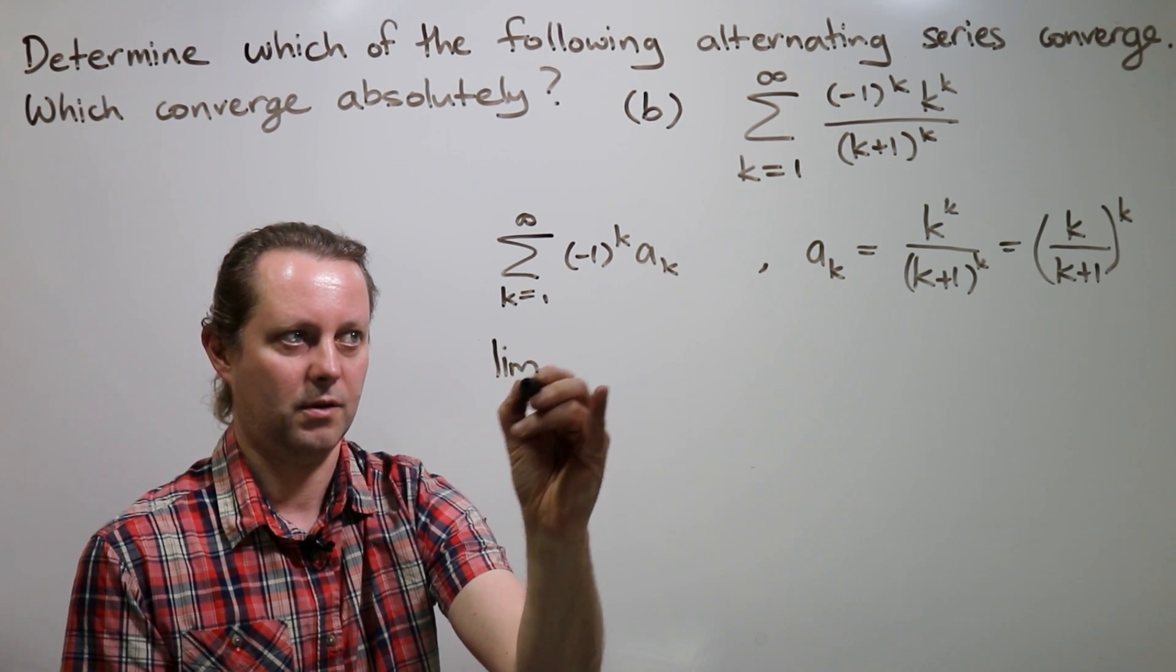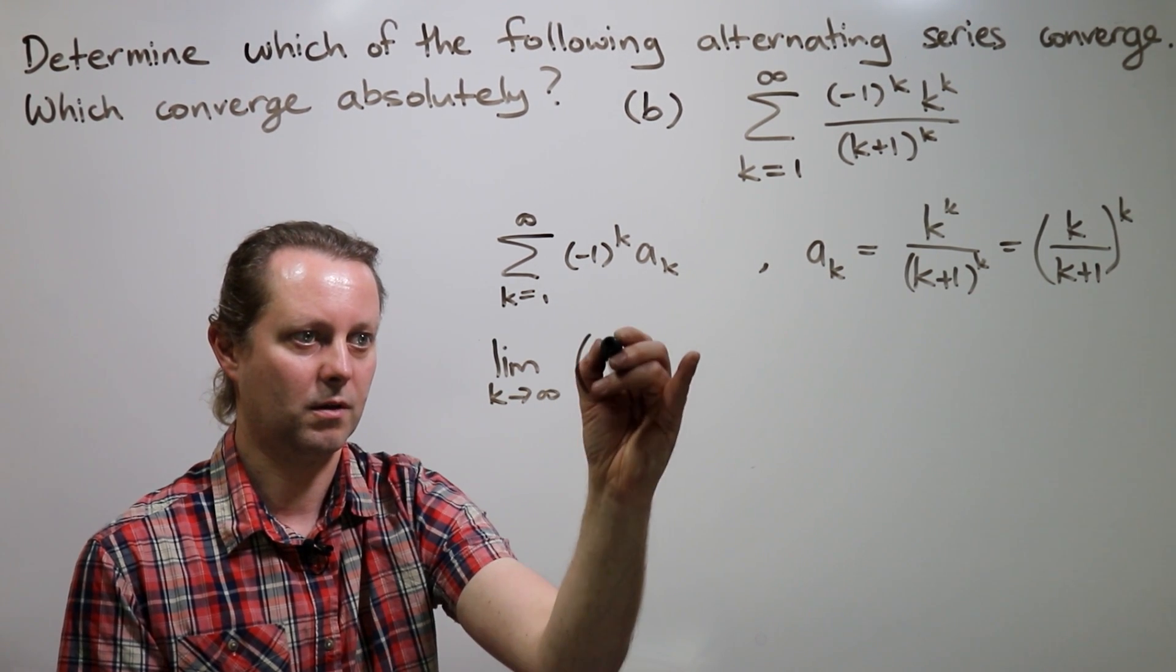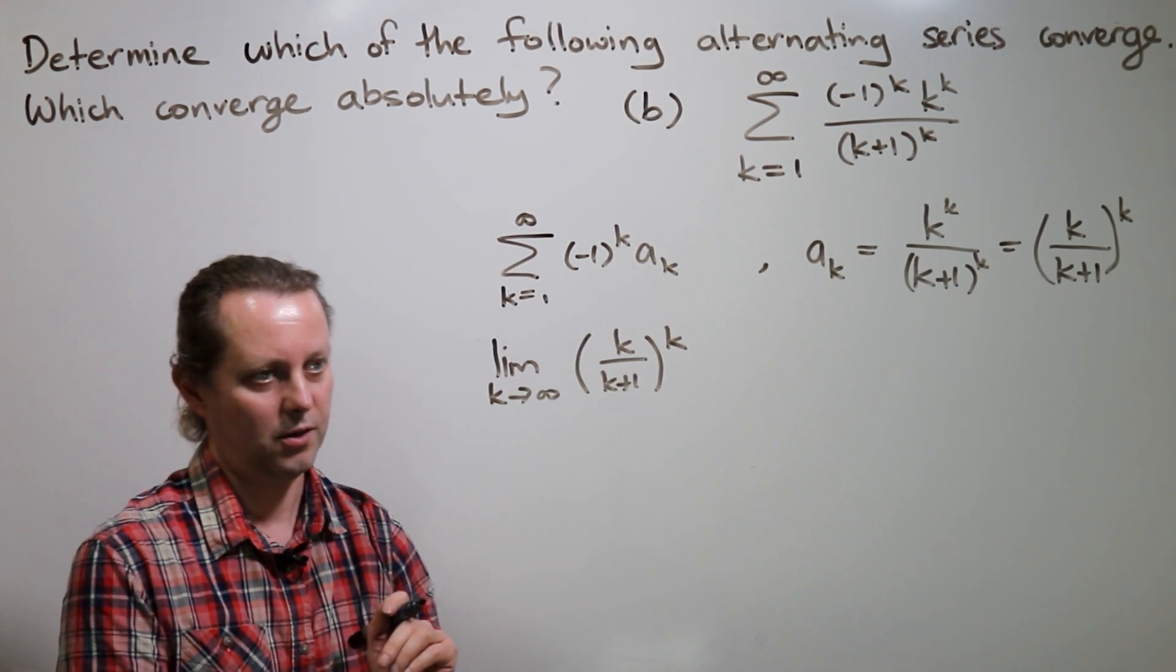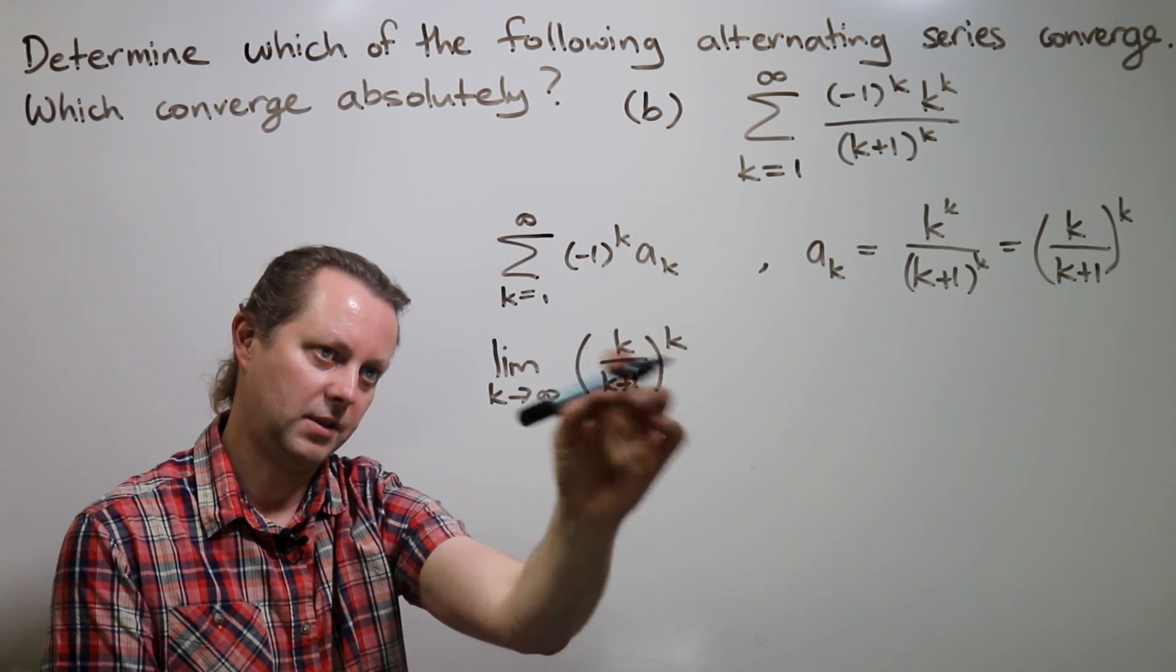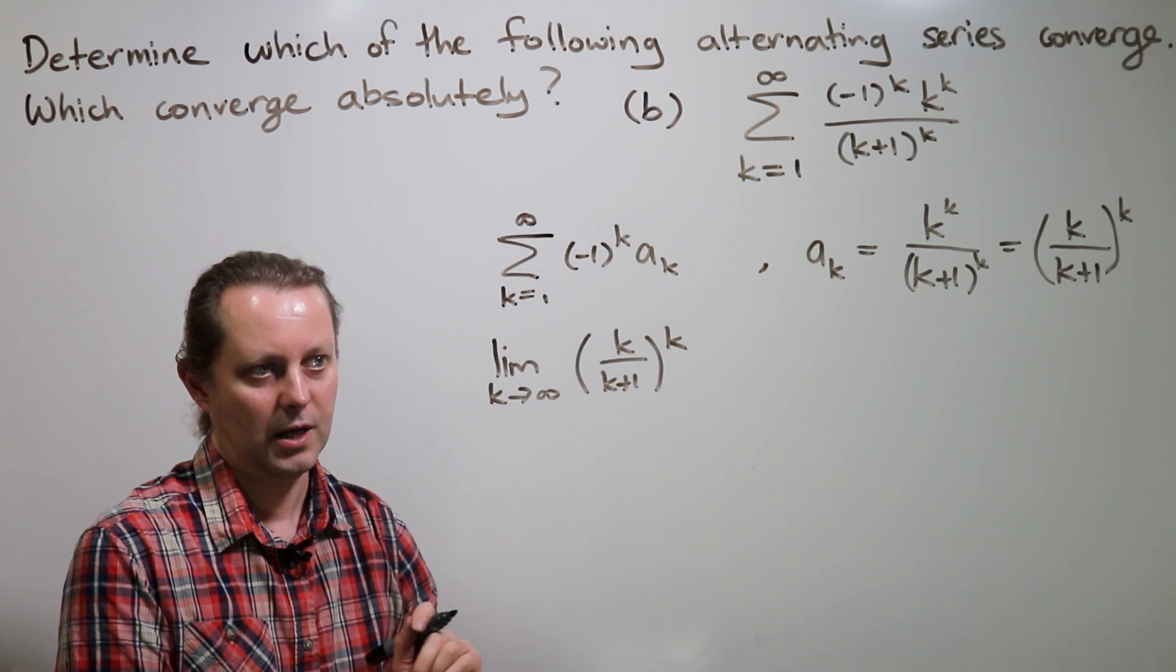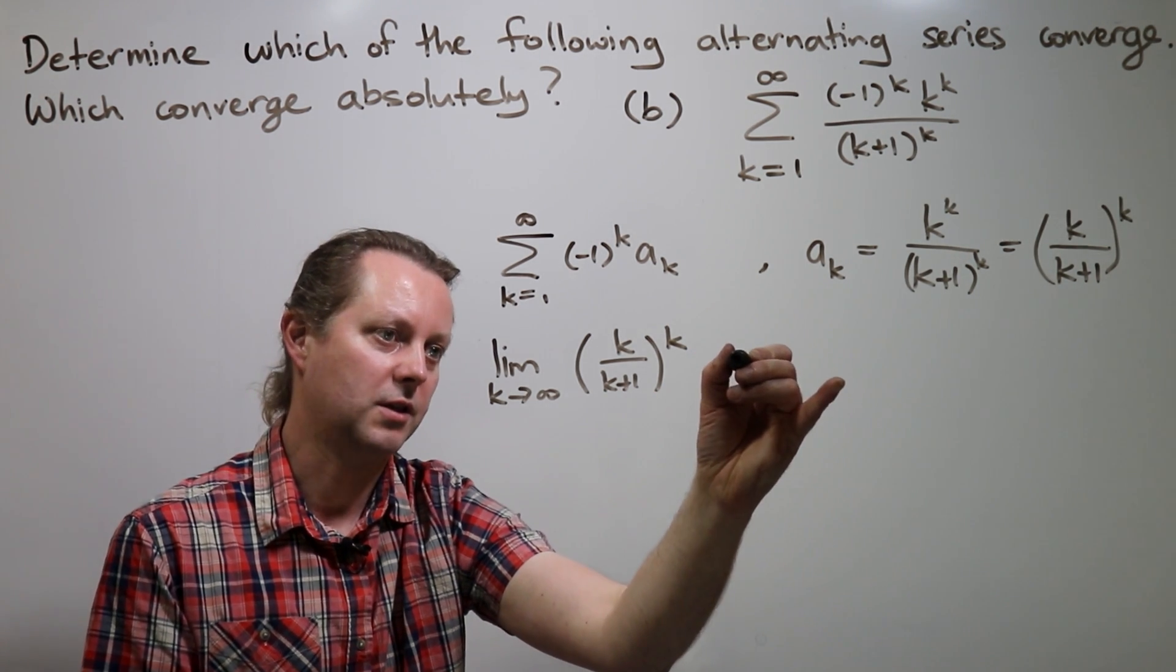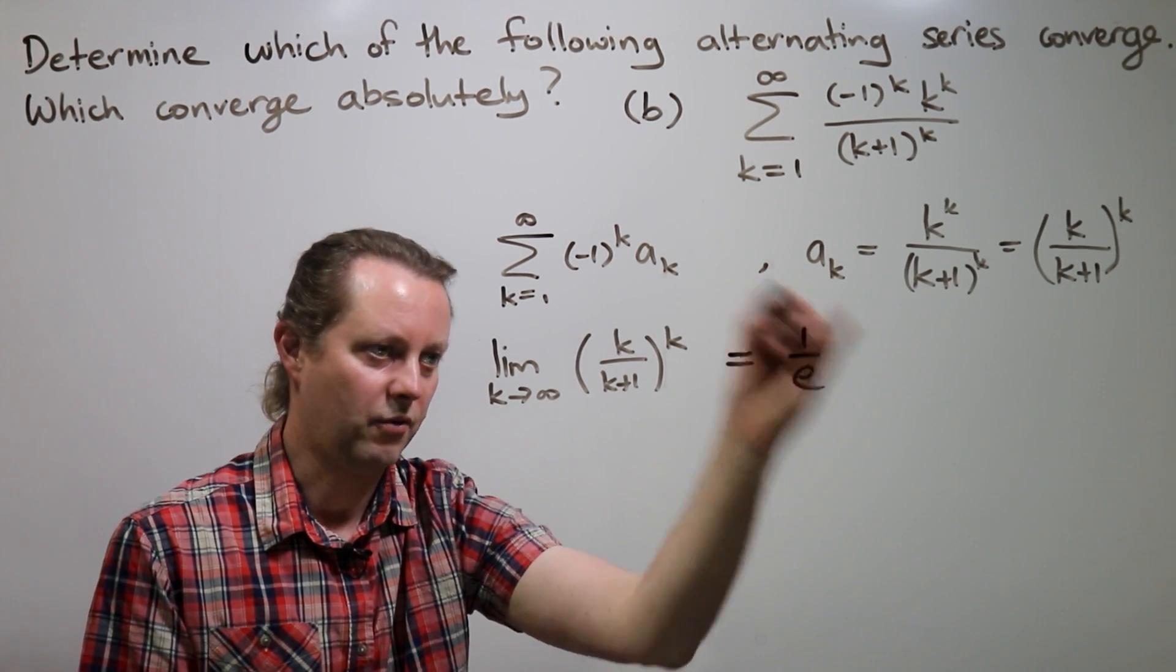And so let's look for its limit. And this is the sort of limit that you need to do a little bit of work on. If you take the log of this expression here, you'll bring the k down the front and then you can use L'Hôpital's rule to find out the limit. I'll just tell you this is a limit that you may have seen before. It turns out to be 1 over e.